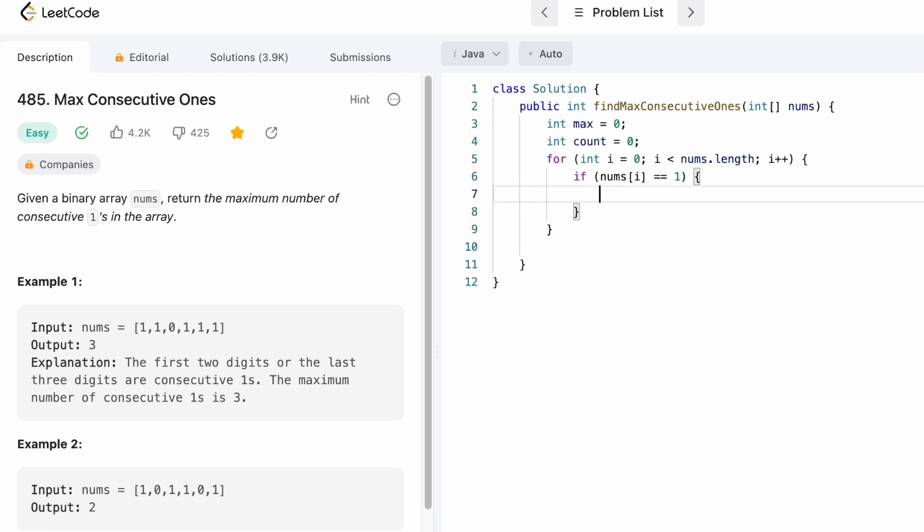If that element is 1, we increment the count variable denoting there is a number 1, and we check if it is the maximum streak until now. In the else block, it means that that number is not a 1. If it is not a 1, we set back the streak to 0. This for loop will happen for all the elements inside the nums array.